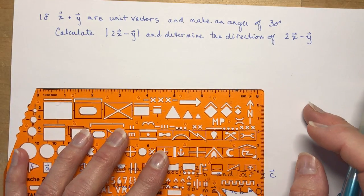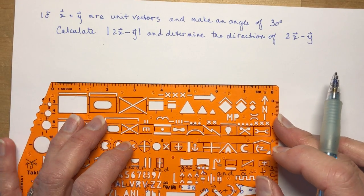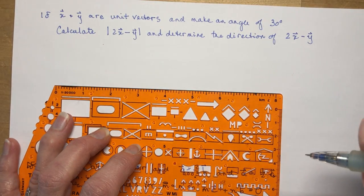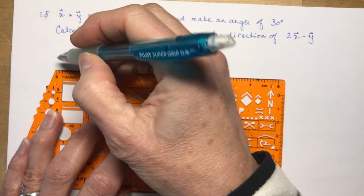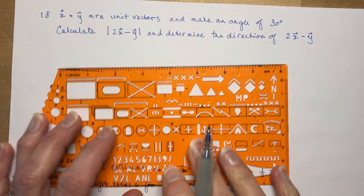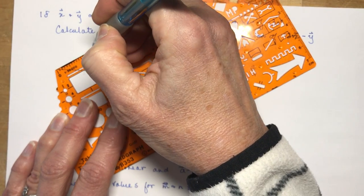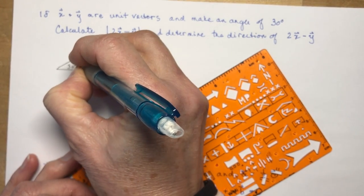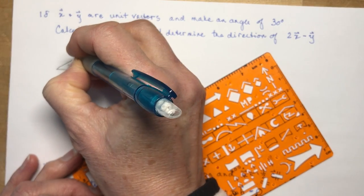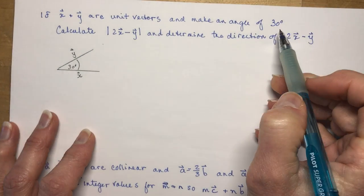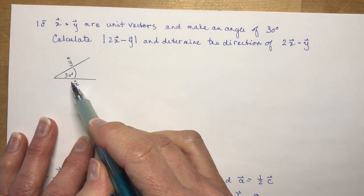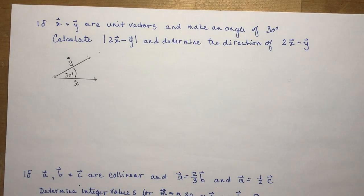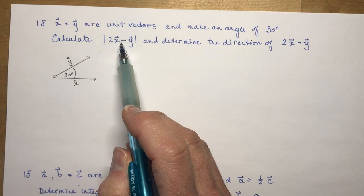Let's draw a picture. X and Y are unit vectors, so let's make them about one and a half inches long. Here's vector X and vector Y — same length, both unit vectors — with an angle of 30 degrees between them, tail to tail. Don't forget the little arrow signs over them. Now, calculate the magnitude of 2X minus Y.